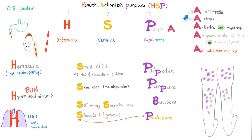HSP 1, 2, 3: arterioles, venules, capillaries. P is for purpura — there is palpable purpura on the buttocks. But people say, 'Oh, purpura, therefore the platelet count has to be low.' No — there is no thrombocytopenia. Platelets are not the issue. The blood vessel is the issue.